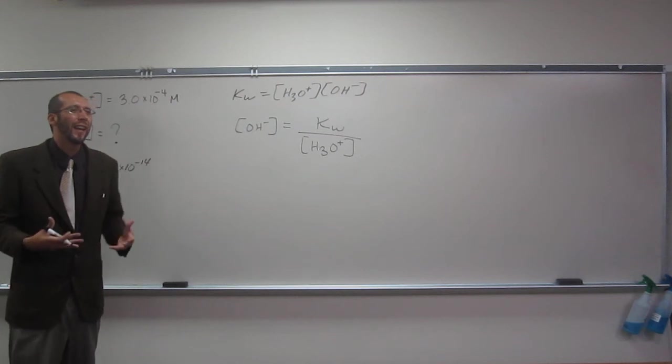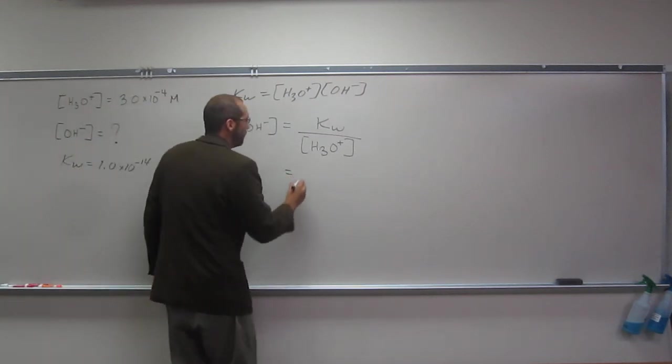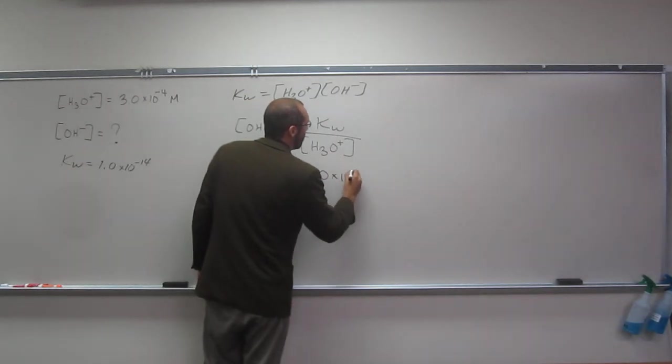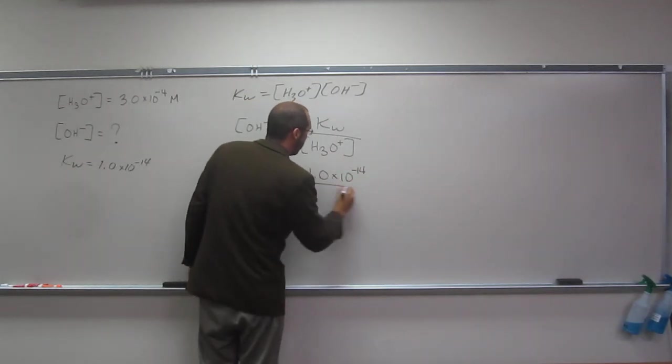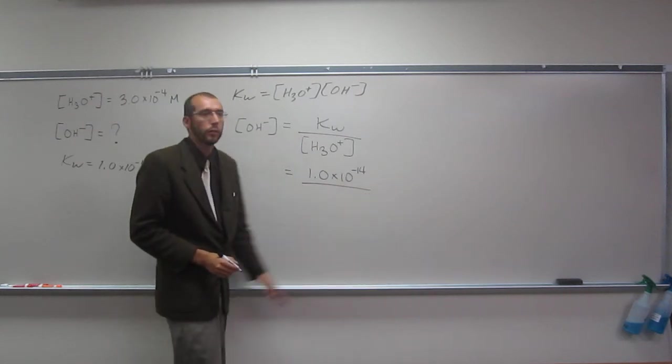So whenever you have those Ks, they always mess up your units. So 1.0 times 10 to the negative 14th divided by, I'm not even going to throw those units in there so we won't get them confused.